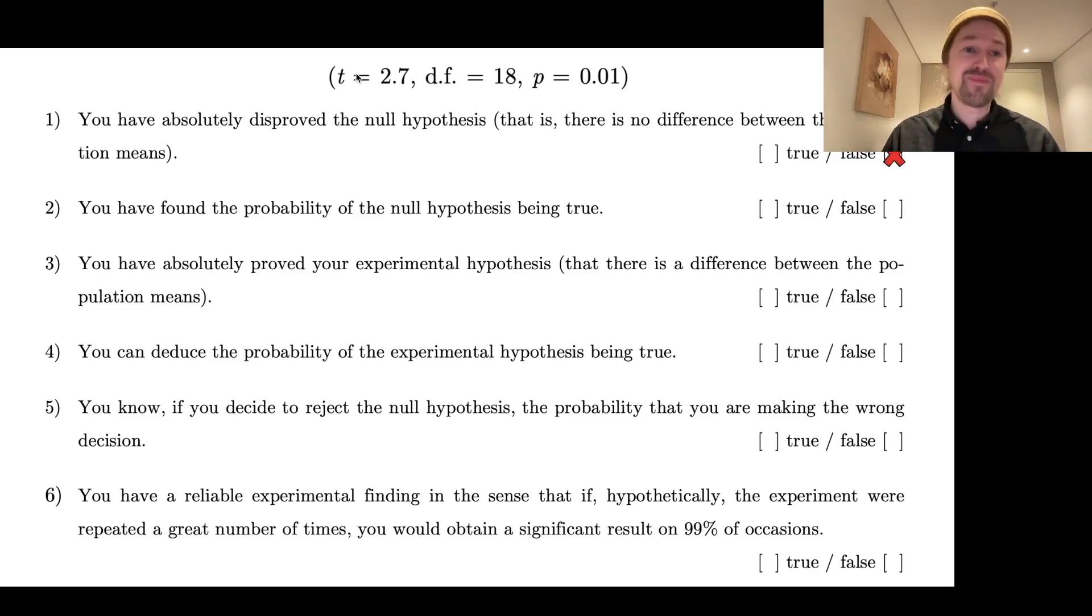So is it the case that you have absolutely now disproven the null hypothesis given the p-value of 0.01? No, of course, that's not the case. Is it the case that you found the probability of the null hypothesis being true? Maybe is it 0.01? No, no, it's not. That's not what the p-value means. And is it the case that you've absolutely proven your experimental hypothesis? No, for sure not.